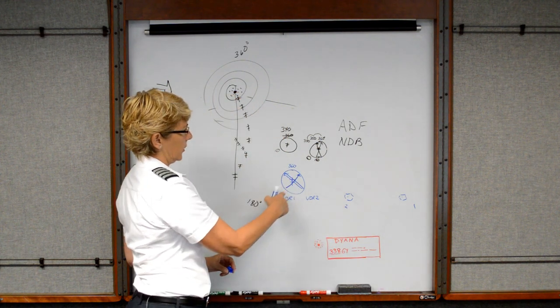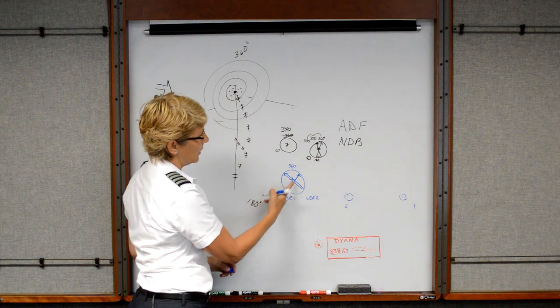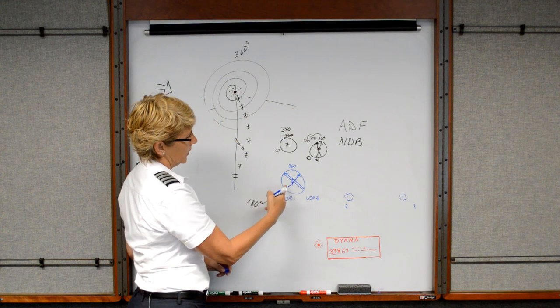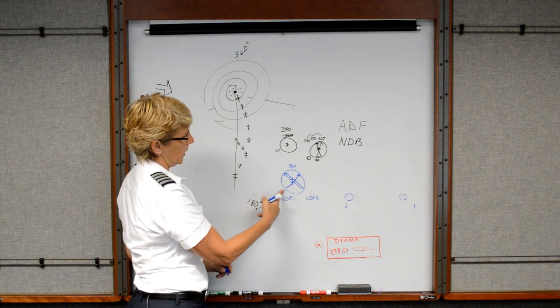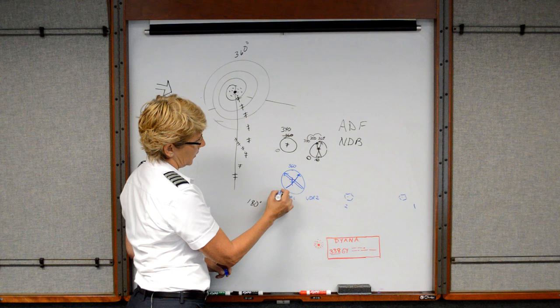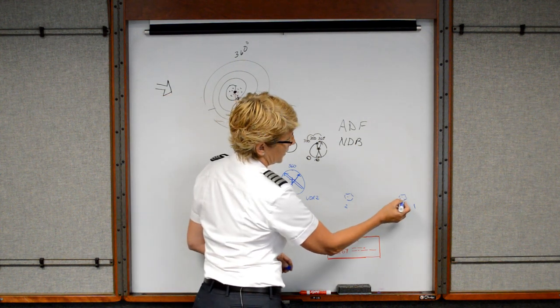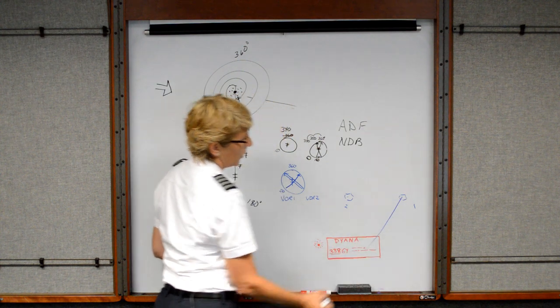What the needle's actually showing me is that the single line arrow for VOR number one says that my position is southwest of the station. So perhaps I'm somewhere off the two, three, zero. So in relation to station number one, I'm somewhere down here.